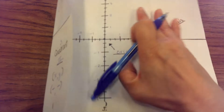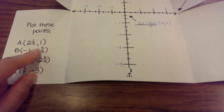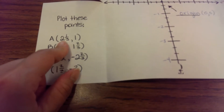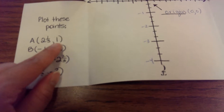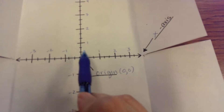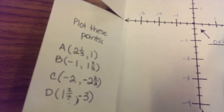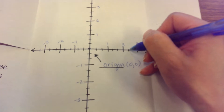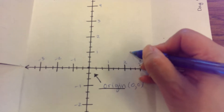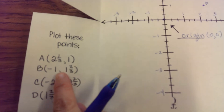Now let's plot some points. Our first point, point A, is (2⅓, 1). The first number — the x — tells us how many steps we walk to the elevator. The second number tells us how many floors up or down the elevator takes us. So we start from the origin, go to the right two wholes and one-third, and then the elevator takes us one floor up. That's where point A is.